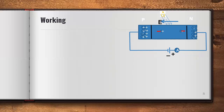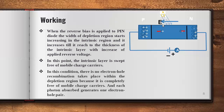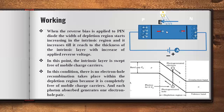At a particular instant of time, the depletion region covers the complete intrinsic region. Once it covers the complete intrinsic region, there are no free mobile charge carriers in the intrinsic region — all charge carriers are removed. In this condition, there is no electron-hole recombination within the depletion region. Once a photon creates an electron-hole pair, electrons move towards the N side and holes move towards the P side due to the internal electric field.